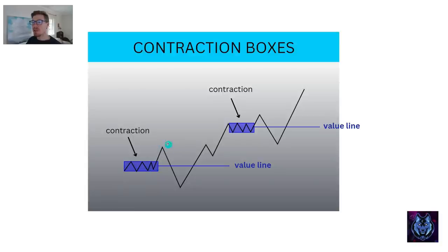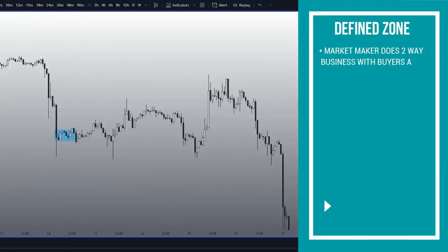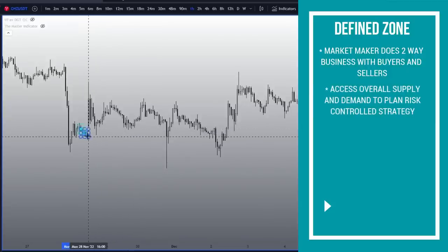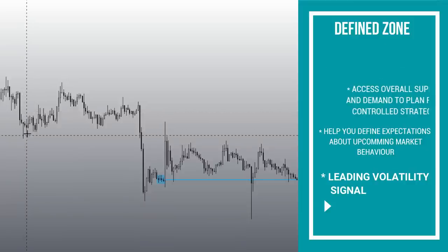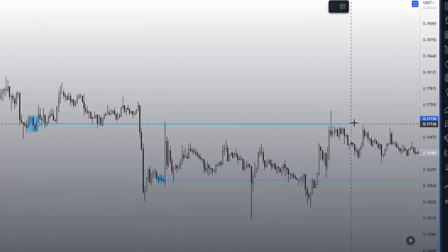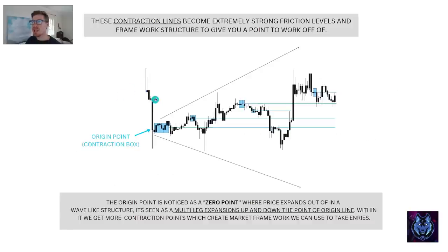Then you see price will break the top of the box through this expansion phase and break the bottom of the box. Once it has broken the top and the bottom, that is where you get a confirmed contraction box and you can draw a line — this becomes the value line, the zero point where the market makers and institutions balance their books. Contraction boxes represent the starting point for the next significant move. It is a defined zone where the market makers do two-way business with the buyers and sellers. They use this time to assess overall supply and demand to plan their risk-controlled strategy. Boxes help you define expectations of upcoming market behavior — they serve as a leading volatility signal, providing banks' starting accumulation points. These contraction lines become extremely strong friction levels and framework structure to give you a point to work off of.